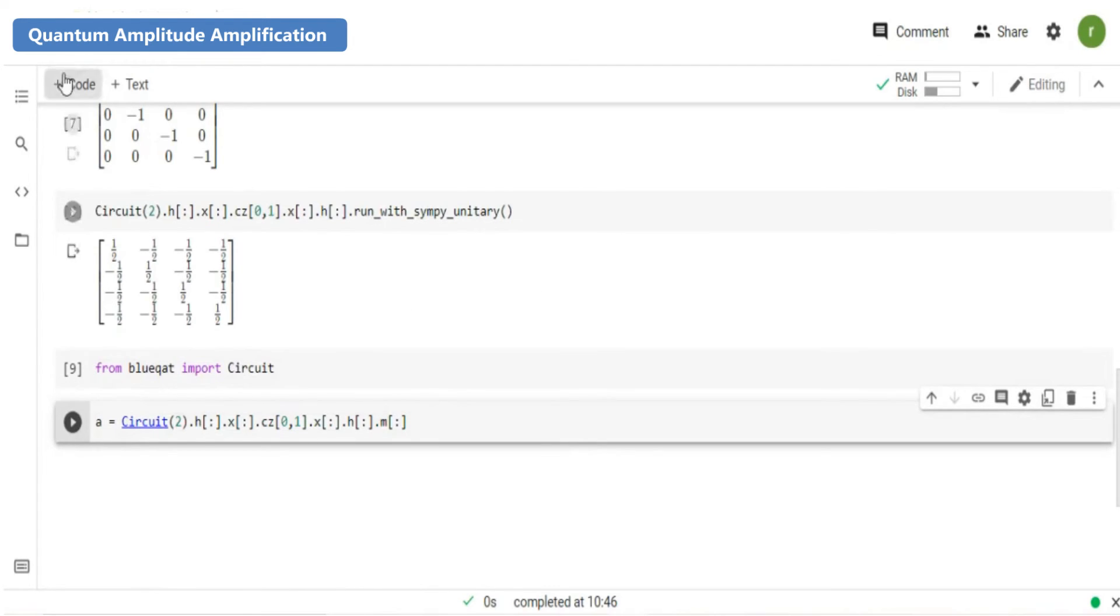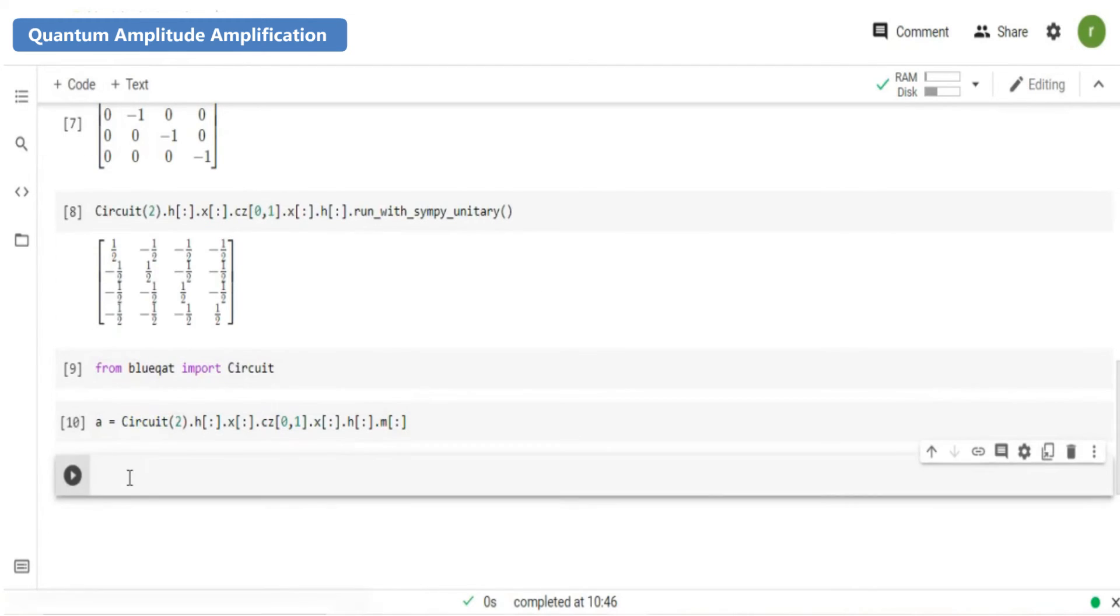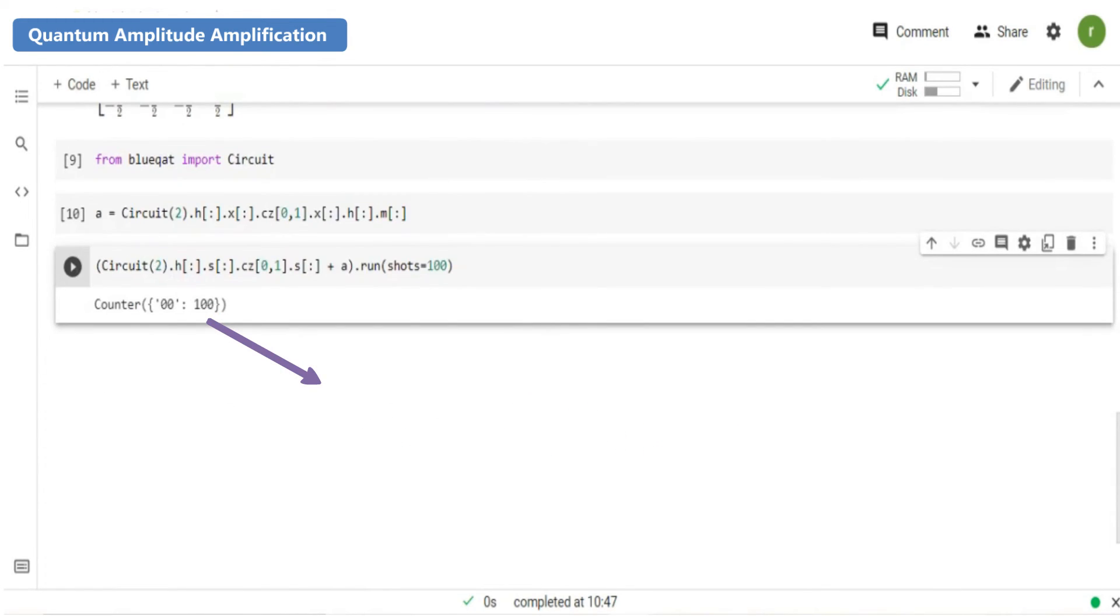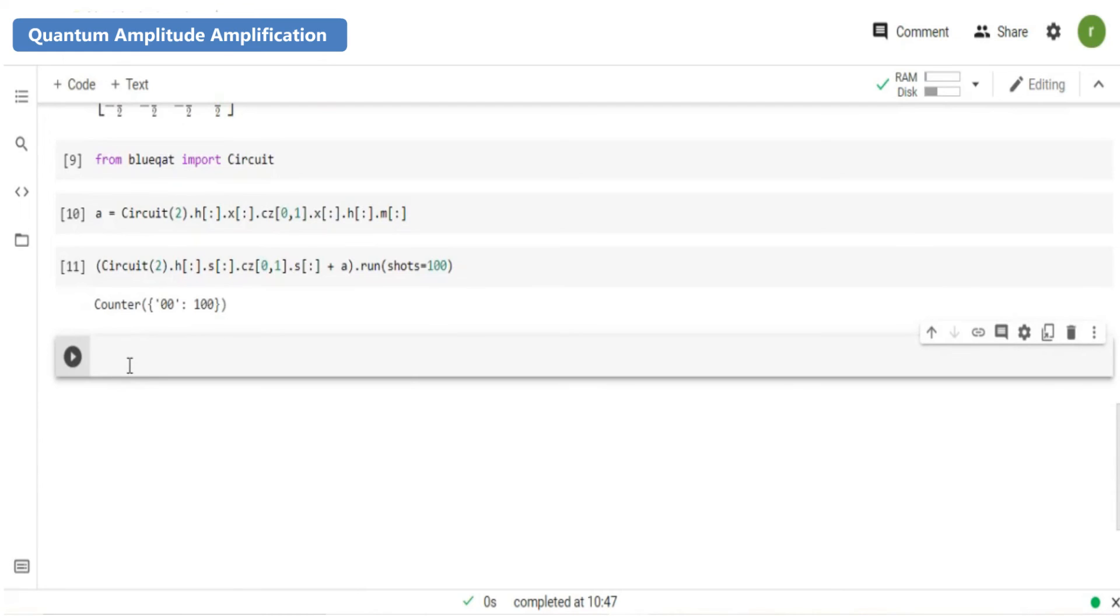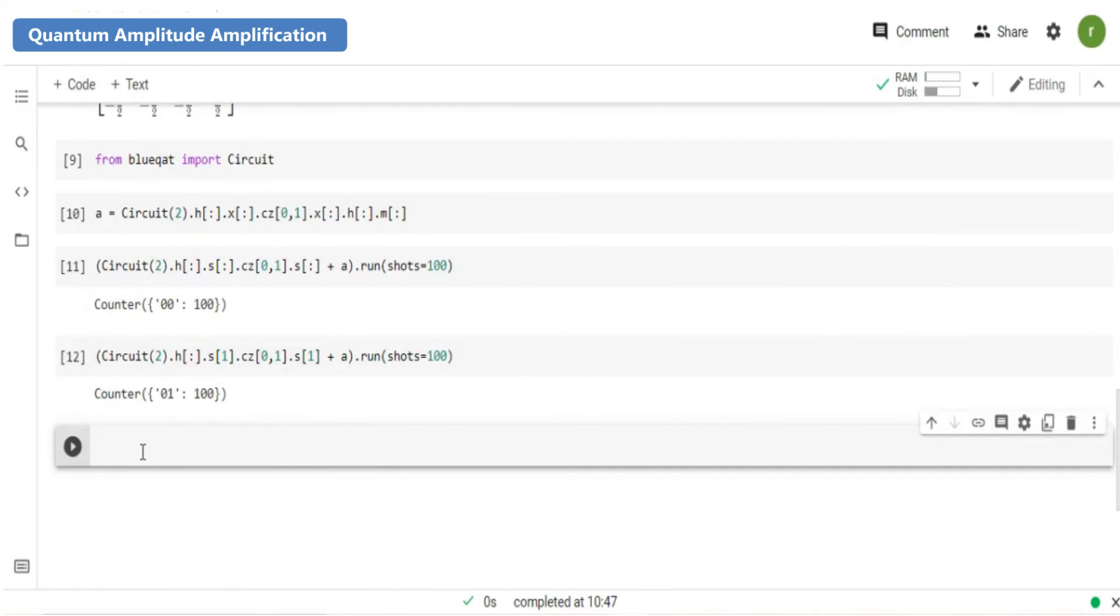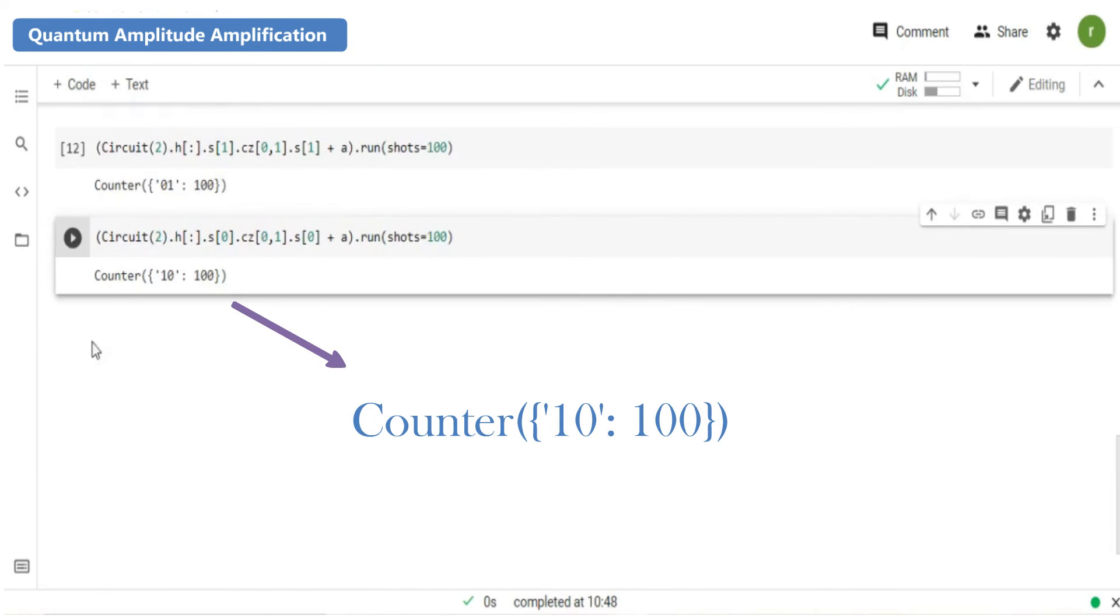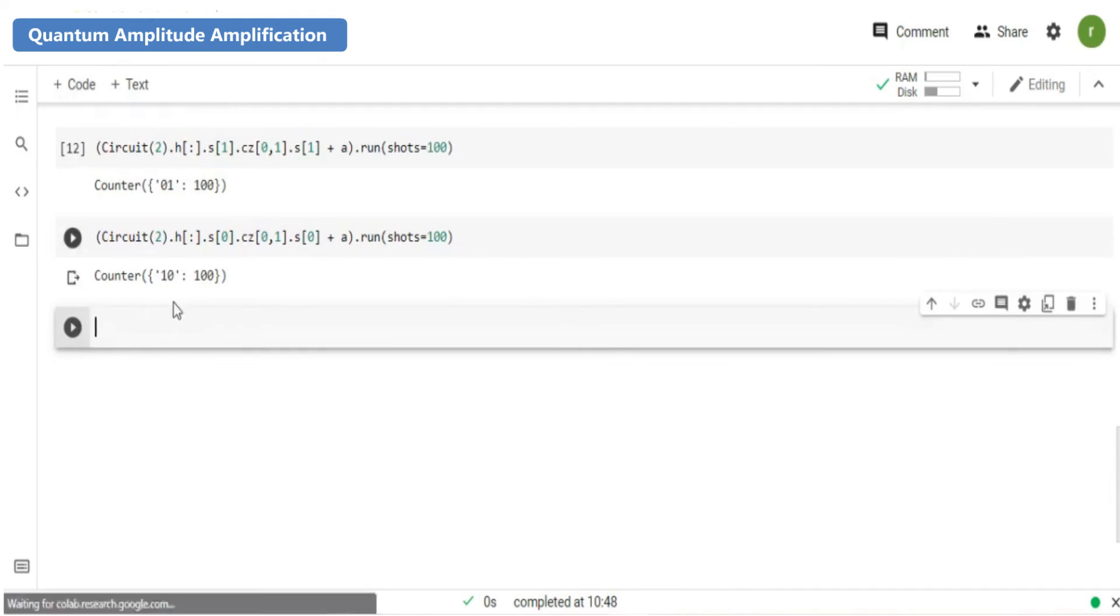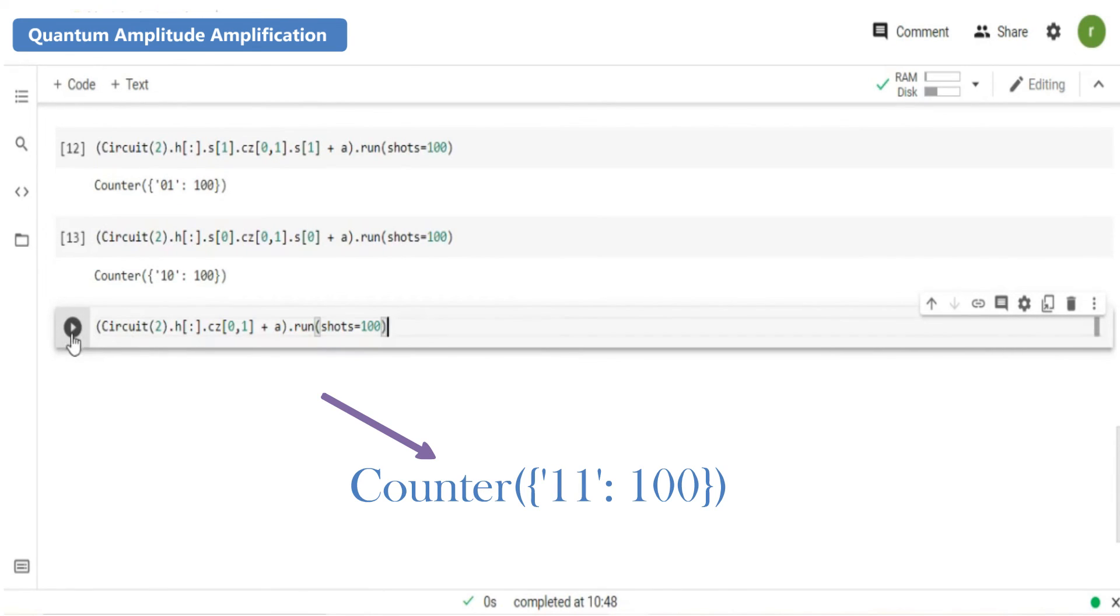This is circuit for binary zero zero and we were able to amplify the probability output. This is circuit for binary zero one and we were able to amplify the probability output. This is circuit for binary one zero and we were able to amplify the probability output. This is circuit for binary one one.